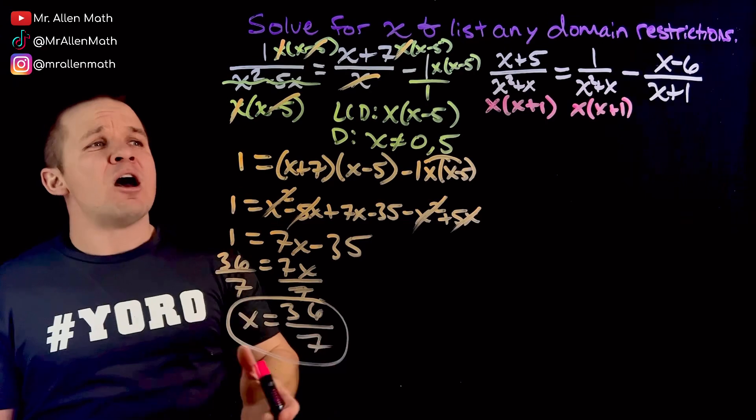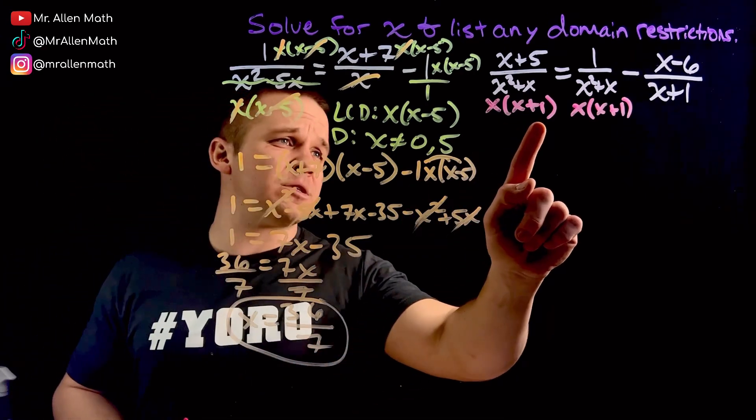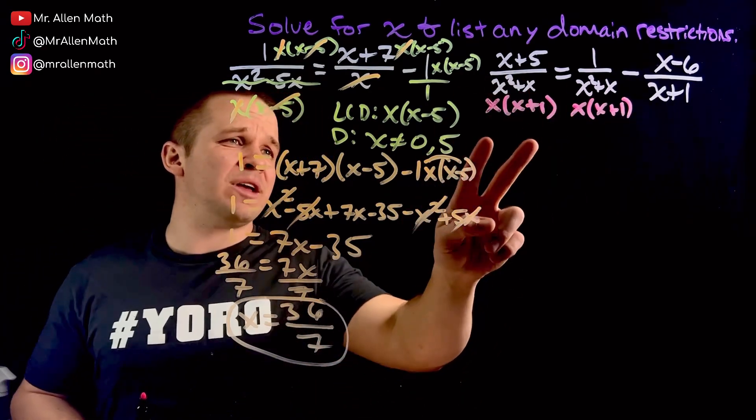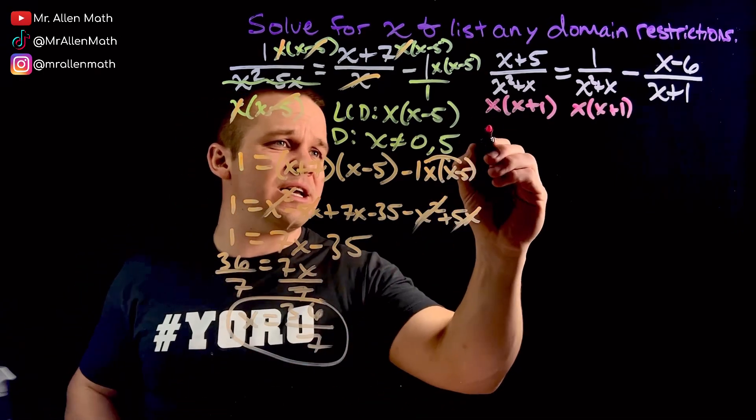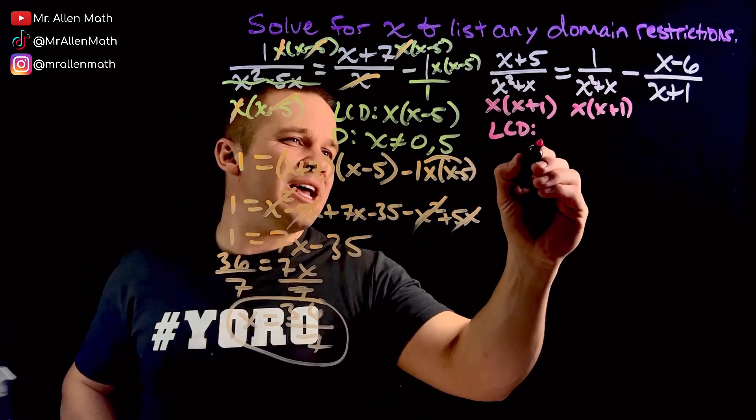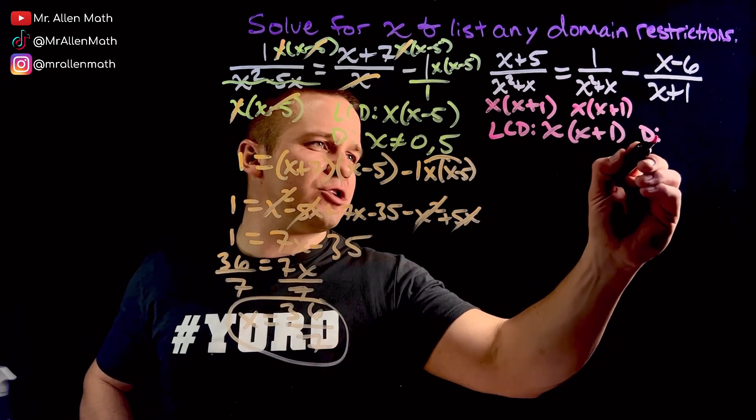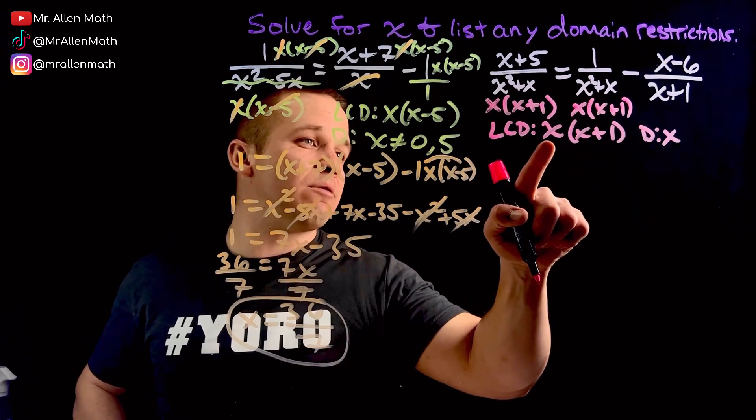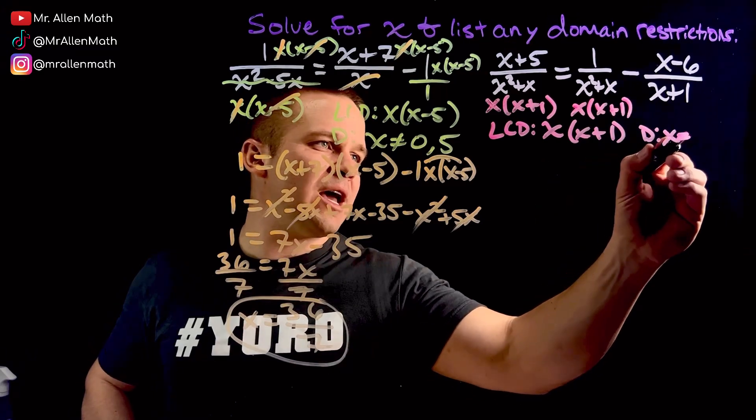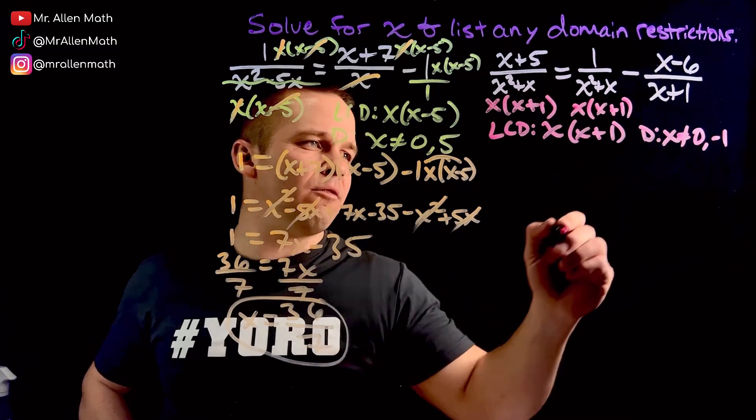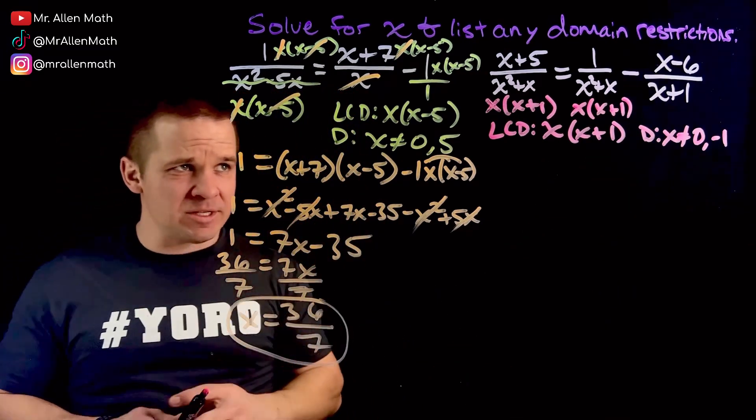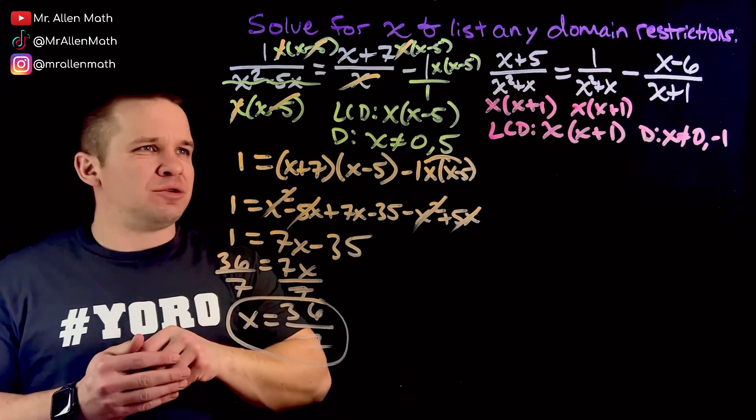So it looks like to me, my least common denominator, it's got to have an x plus 1. And it's got to have an x. That would take care of everything here. This guy is our LCD. Least common denominator is x times x plus 1. And my domain restriction, we'll do it right now. x cannot equal 0 and negative 1. So cannot equal 0 and negative 1. Beautiful. Let's go to town.